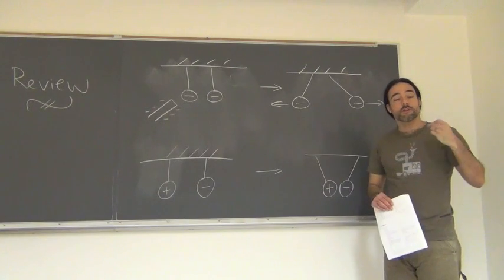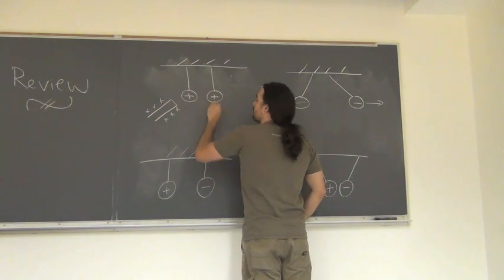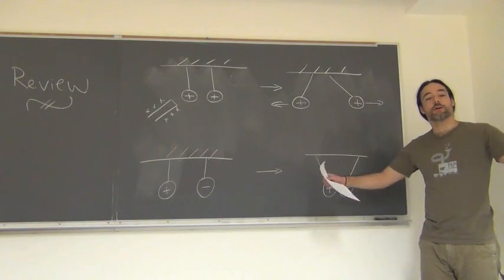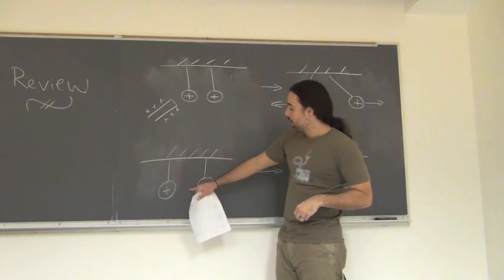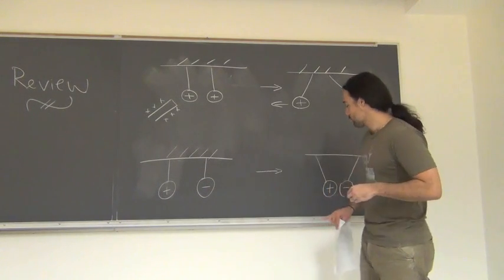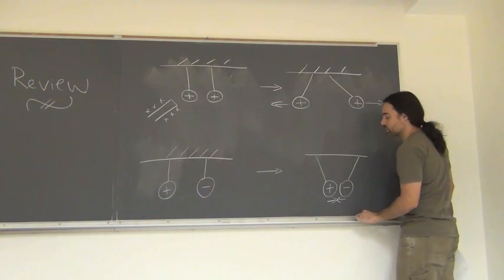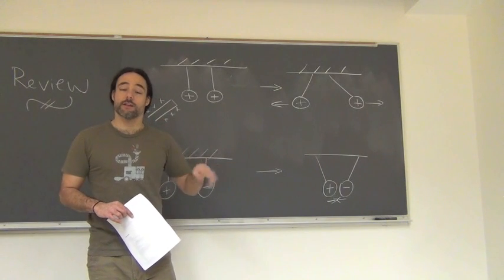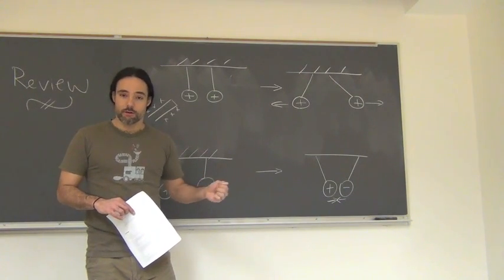Like charges repel. I could do the same thing with positive charges — charge them up positive and again we'd get a repulsive force pushing the pieces of aluminum in different directions. Similarly, if I charged one piece with a positive charge and one with a negative charge, those two objects would be attracted toward each other, because opposite charges attract. So the basic property of charges is: there are two types, labeled positive and negative; like charges repel, and opposite charges attract.